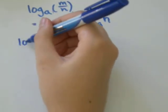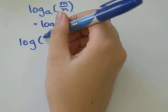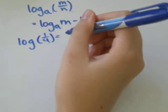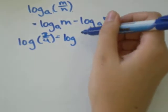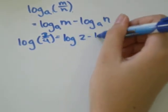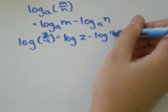For example, if we had log of 2 over 4, that would be log of 2 minus log of 4.